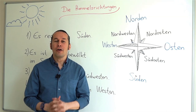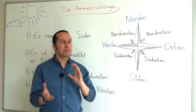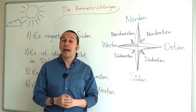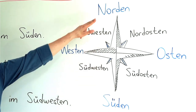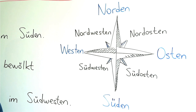In this part, we are going to have 'die Himmelsrichtungen' — the directions. In this graphic you may understand what I mean. In German: north is 'Norden,' west is 'Westen,' south is 'Süden,' east is 'Osten.' For northwest it's easy: 'Nordwesten.' Northeast is 'Nordosten.' Southwest is 'Südwesten.' Southeast is 'Südosten.'